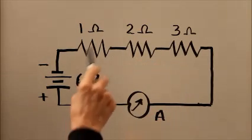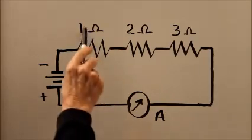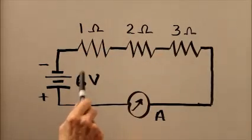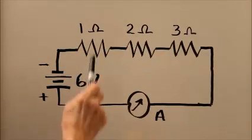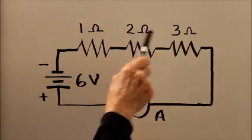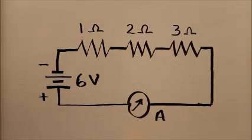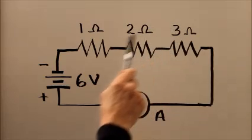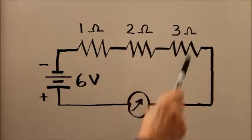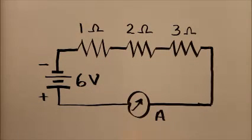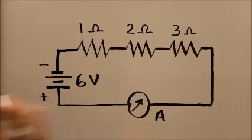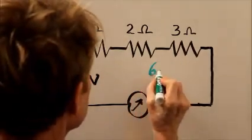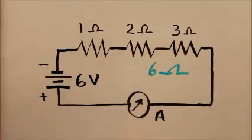This is just a hypothetical example so the numbers work easily. A 6 volt battery, a 1 ohm, 2 ohm, and 3 ohm resistor in series. When they're in series, their resistances add, so the total resistance here is 6 ohms — 1 plus 2 plus 3.